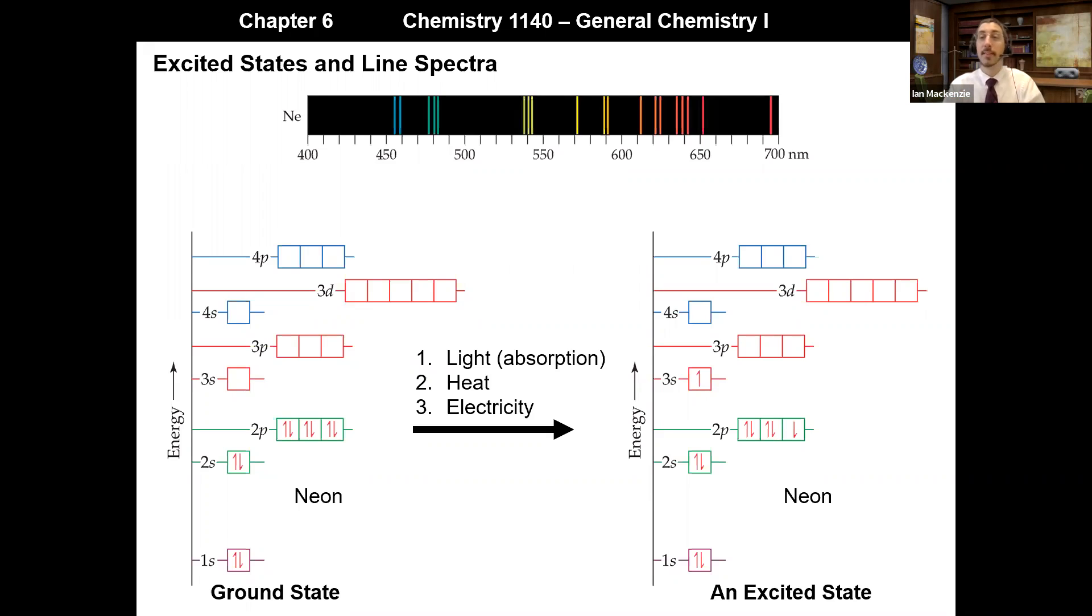The last one is electricity. And this is how most light bulbs, so fluorescent light bulbs in the ceiling, neon signs, in those cases, we're simply using electricity to excite the electrons to a higher energy orbital. And then when they relax back down, they produce the light that we then use to light our homes or state that the store is open or closed, et cetera.